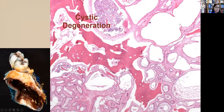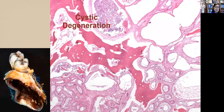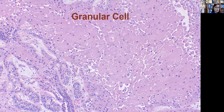We can see the cystic degeneration on a macroscopic level in the resection specimen. This is why we don't make the call of unicystic ameloblastoma unless we have the entire specimen in front of us, because the cystic degeneration within an ameloblastoma can be quite impressive.